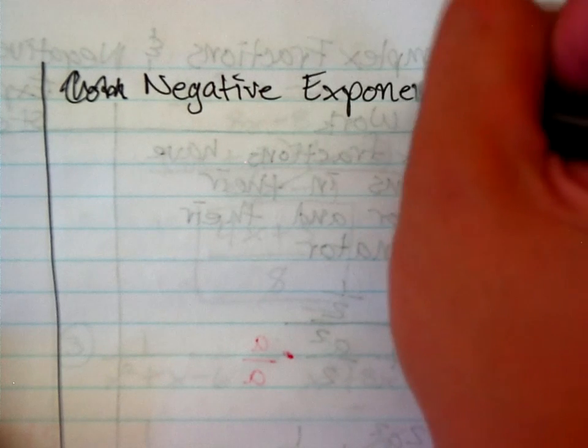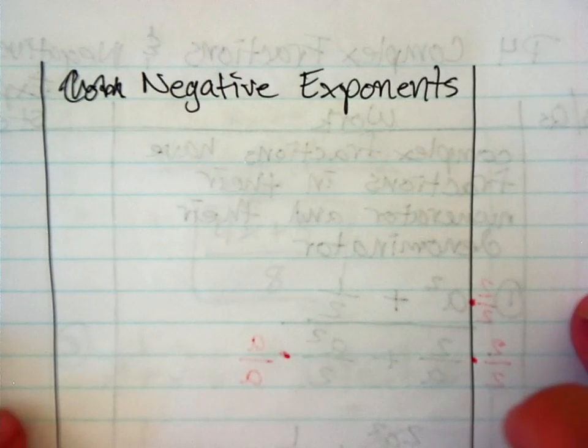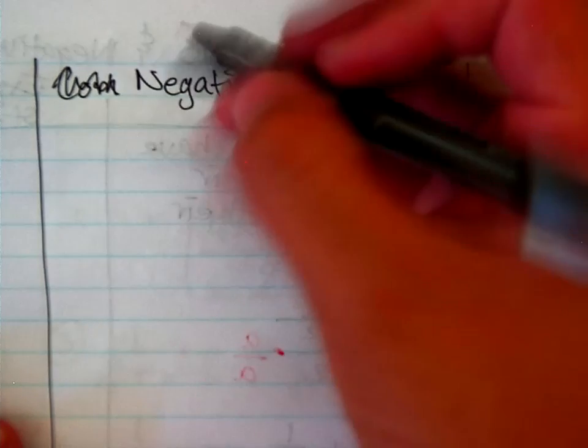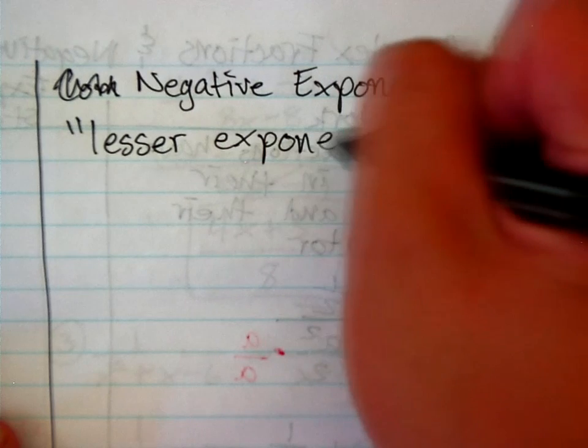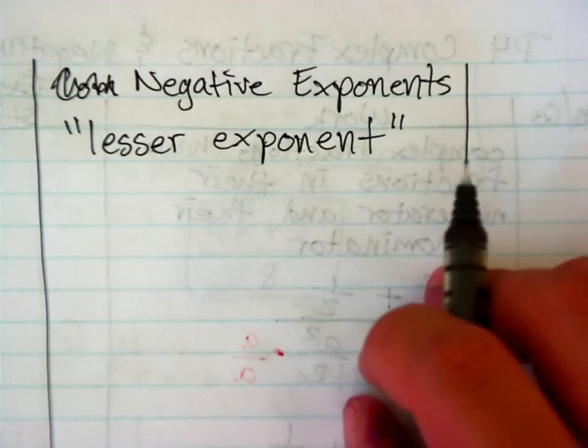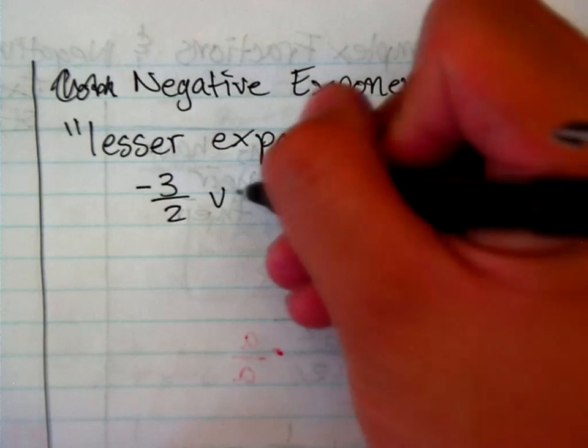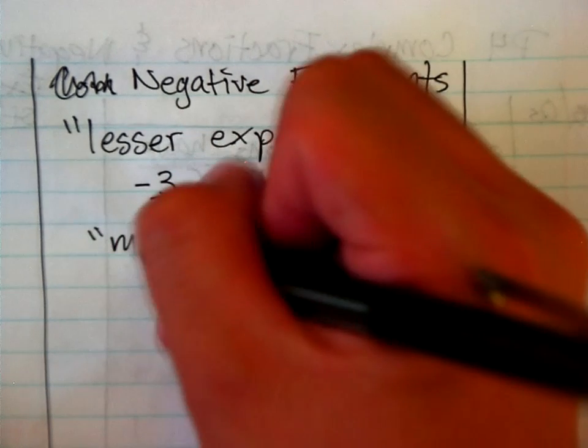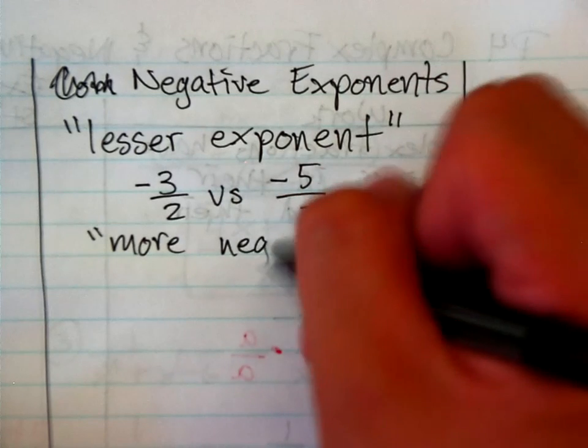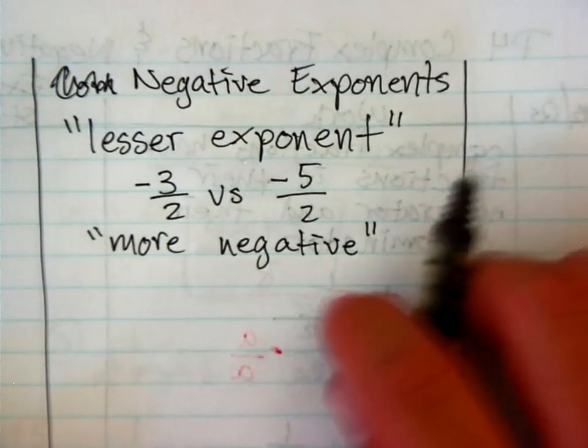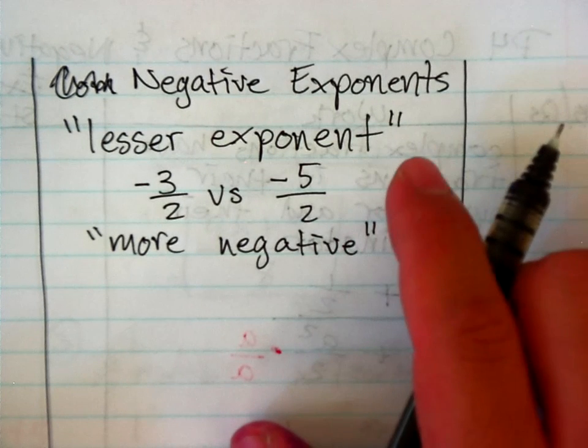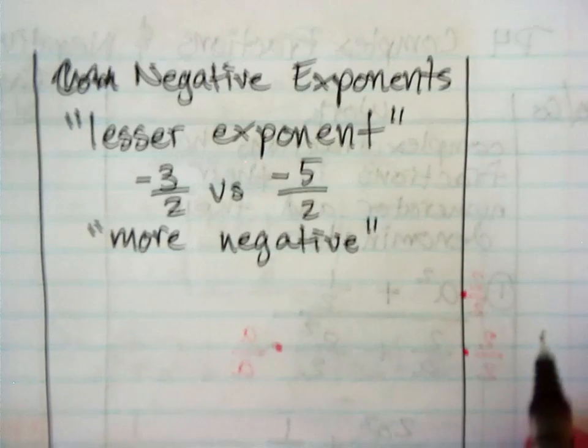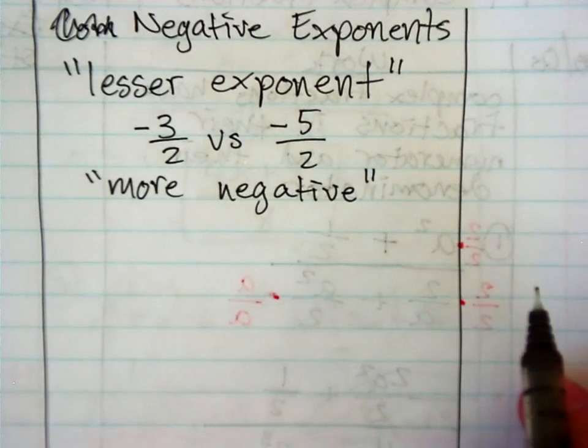Okay, so negative exponents. And we're going to be dealing with expressions that have negative exponents. Our goal is to look for something called the lesser exponent. We already know how numbers fall on the number line, and this is pretty much the same concept. If we have the exponent negative 3 halves versus negative 5 halves, negative 5 halves would be the lesser exponent because it's more negative. It's further away from zero, okay? So, that's one way to think of it. You can also think of it as the fact that, well, actually, no. I would keep it at that. Okay, so, lesser exponent. Just look for the one that is the more negative number.